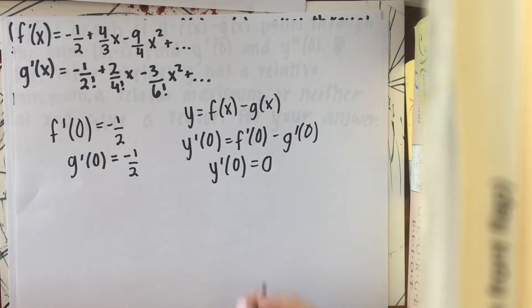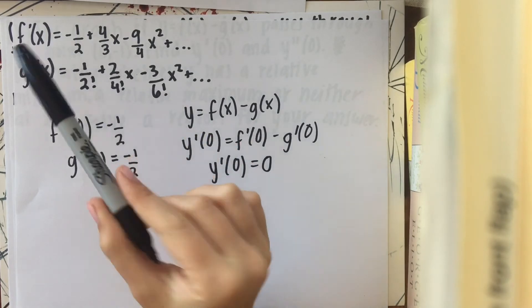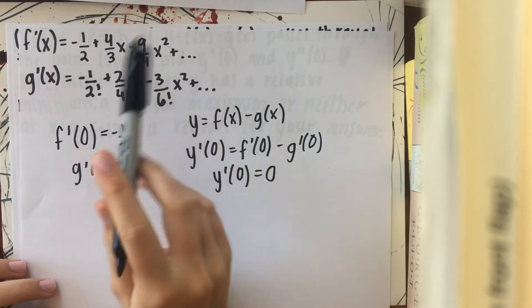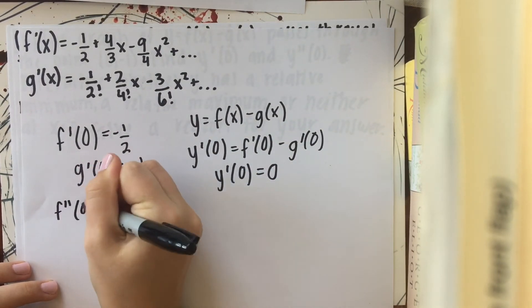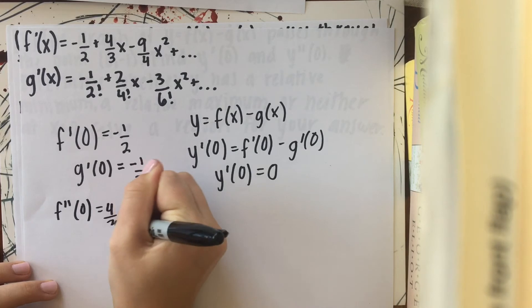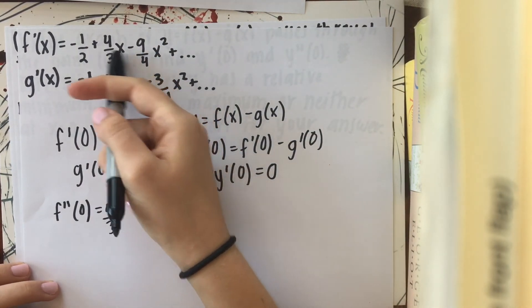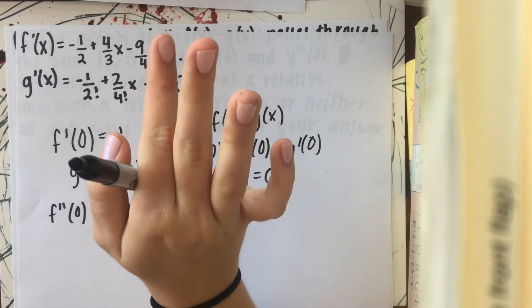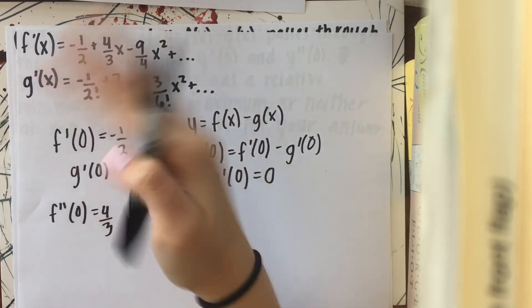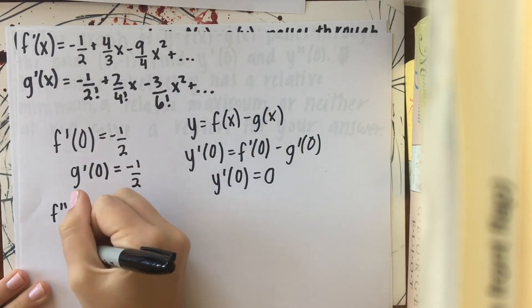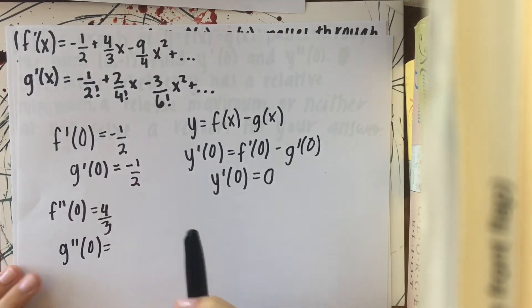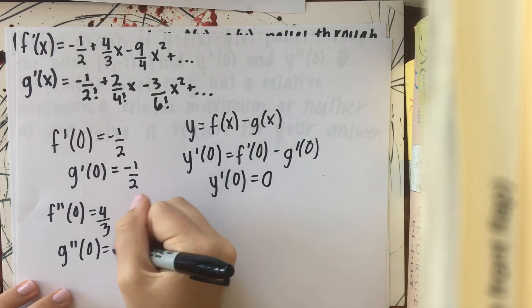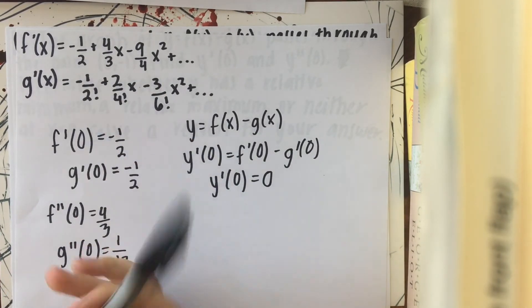Now we have to find y double prime of 0. And so then we have to take the second derivative of these two and evaluate it at 0. And just by looking at it, you can see that f double prime of 0 is going to equal 4 thirds. Because when you take the derivative, this x is going to go away. So this is going to be the only constant left over. And all the rest of the terms are going to equal 0. Because when you plug 0 in for x, they'll just go away. And now g double prime of 0 is going to be this 2 over 4 factorial, which is the same thing as 1 twelfth, because of the same reason as I stated for f prime of x.